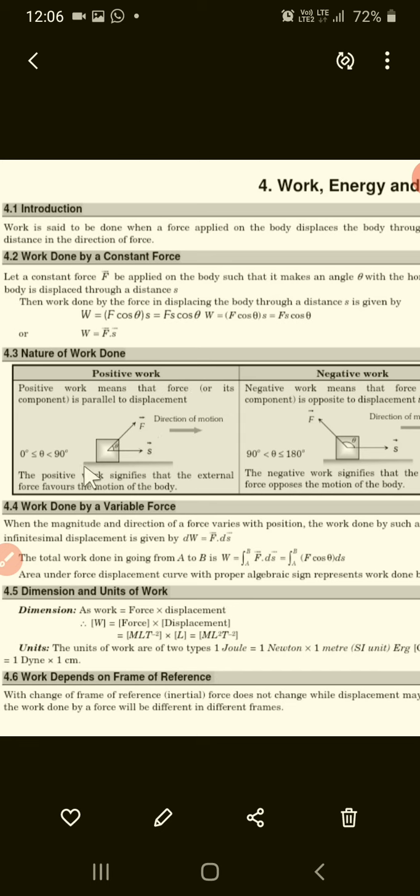If we discuss positive work, then theta must be less than 90 degrees. The positive work signifies that external force favors the motion of the body. If positive work is there, then what does it mean? The external force favors the motion of the body, meaning force is acting in the same direction. So work done is W = F·S.